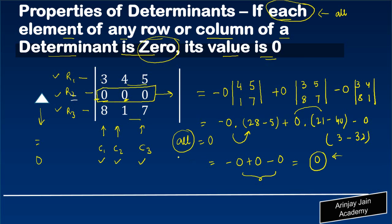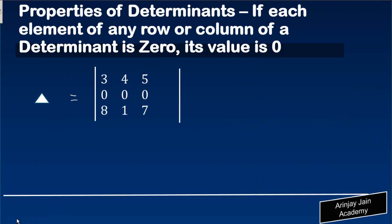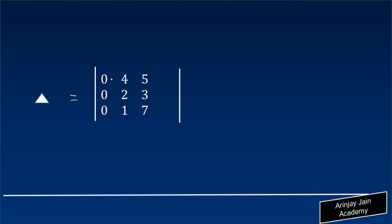A similar thing can be applied to a column. In this case, the first column has all numbers equal to zero. Whenever all the numbers are zero, the best way is to expand using that particular row or column. In this case, the column is zero, so we'll expand using this column.